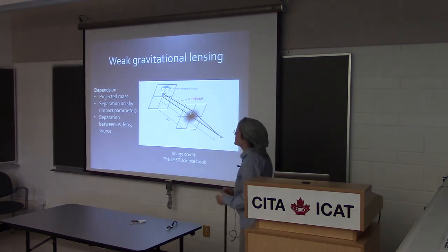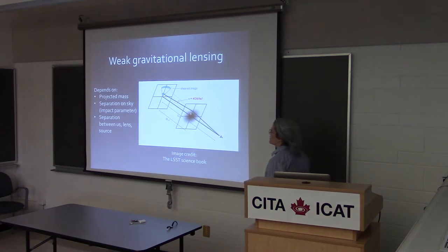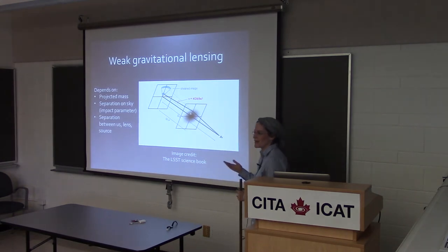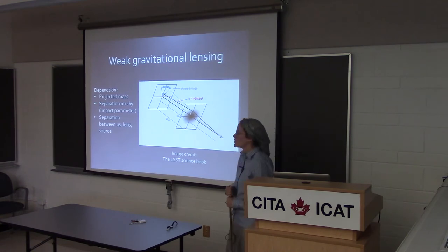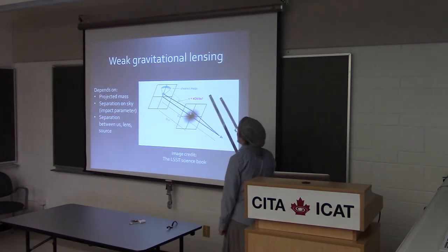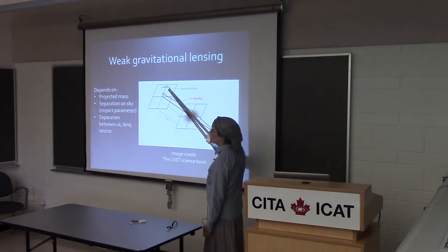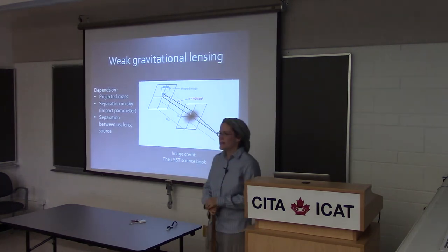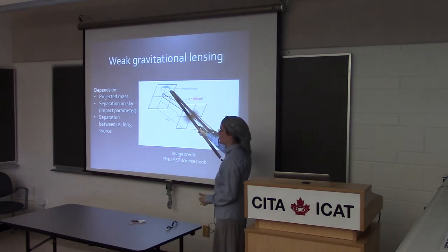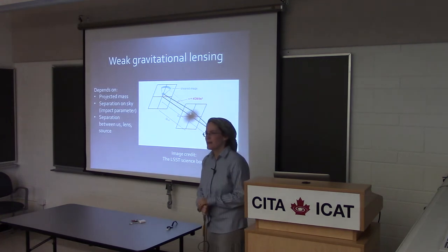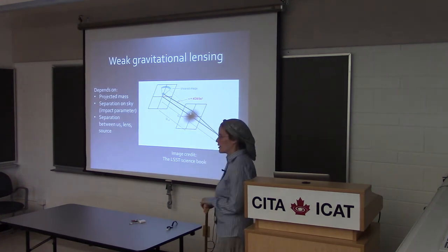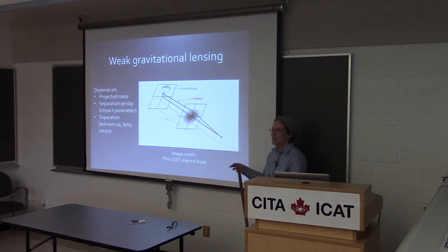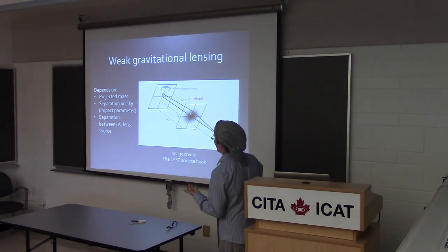The measurement I use is weak gravitational lensing — gravitational lensing in the limit that the deflection angles by which the light is deflected are very small. We don't get multiple images here. Instead, we have images that get distorted — they get what we call sheared, a kind of tangential smearing effect. This is a very small effect, typically percent-level distortions in shape, much smaller than this exaggerated picture. Its advantage over strong lensing is simply that we don't have to rely on a serendipitous projection of one object behind another — weak lensing happens essentially everywhere.